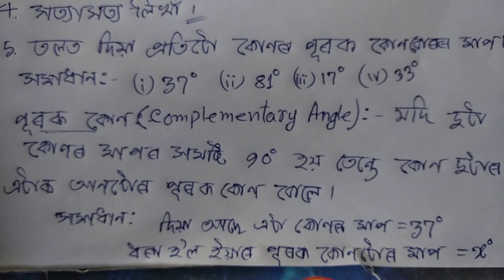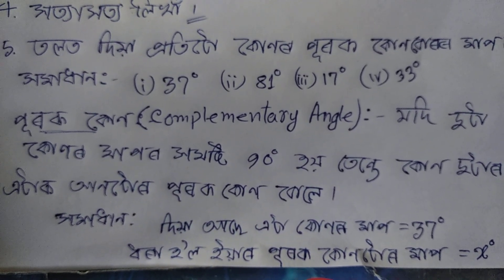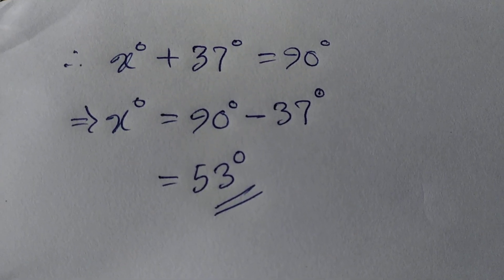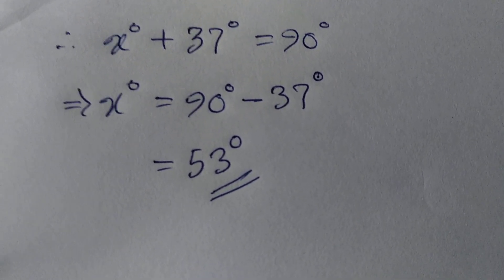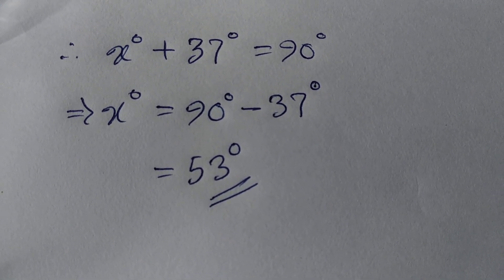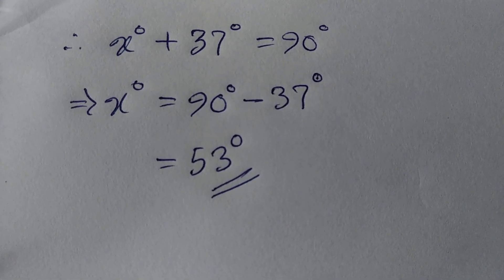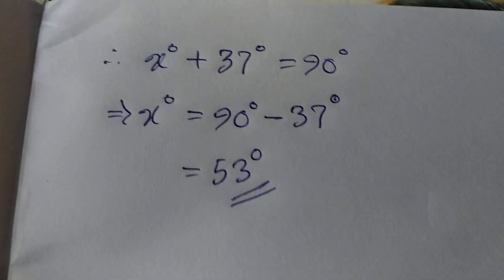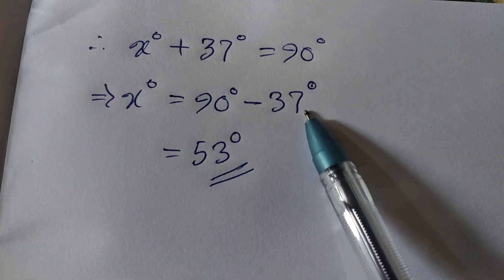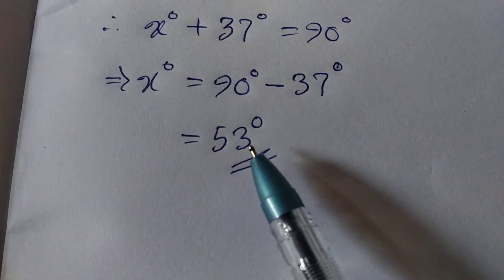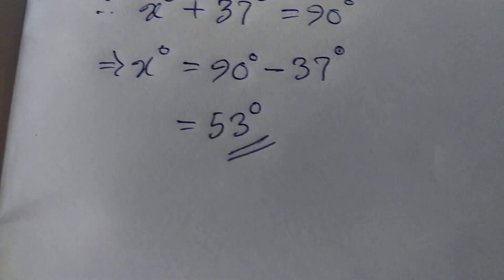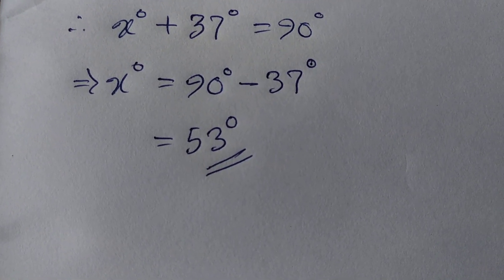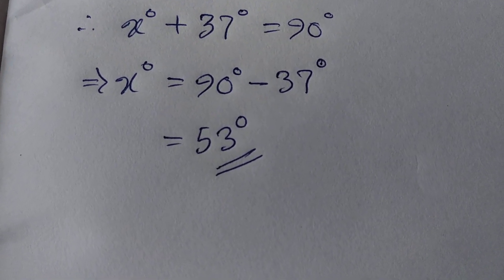If you look at the map, what is USA? He has 90 degrees. 37 degrees is equal to 90 degrees. If we keep the x degree, 90 degrees is equal to 37 degrees. If we keep x, x degree minus x degree is equal to 50 degrees. That's the answer. If you have any questions, please like and share.